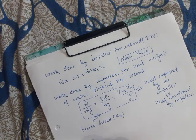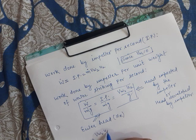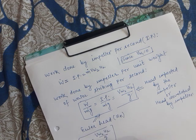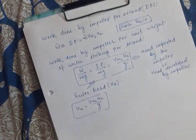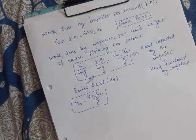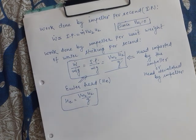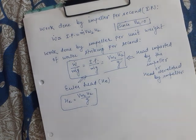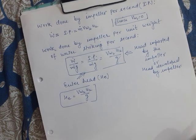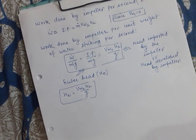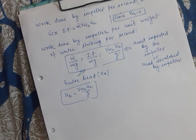So the Euler head He = vw2 · u2 / g is the head imparted by the impeller to the water. Now let's move to another important head: the manometric head.